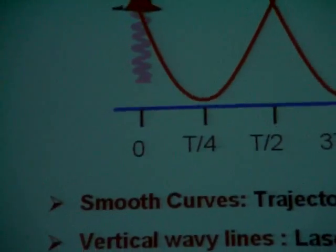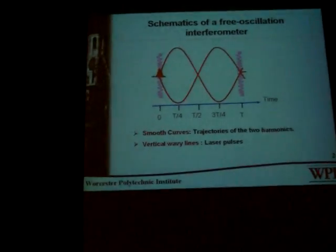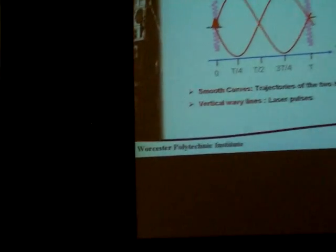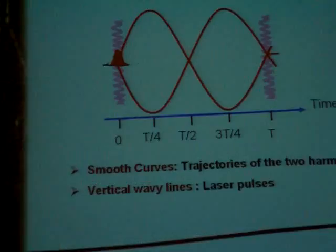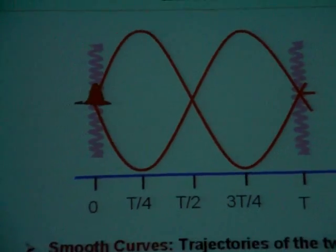So this is the theme of the pre-oscillation interferometer. The block there is the BEC at the center of a magnetic trap, which is a confining magnetic trap. These smooth lines are the trajectory of the Bose-Einstein condensate, and these wavy lines are the laser standing waves. At time t equal to zero, the BEC is split into two harmonics — meaning two clouds — and the two clouds travel in opposite directions.